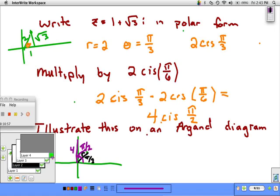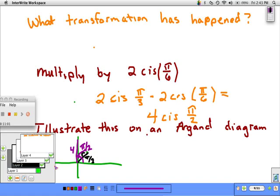So to summarize, what transformation has happened? There's been a rotation of pi over 6 and the length of this number has doubled. The distance from the origin has doubled.